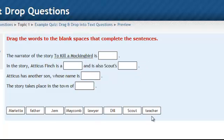Here are the options, and you can have more options than you have spaces. So the narrator of the story To Kill a Mockingbird is, and you can fill it in with the information by just dragging that item up there. Now I also want to point out that once this one was pulled up here, it went away from the list.